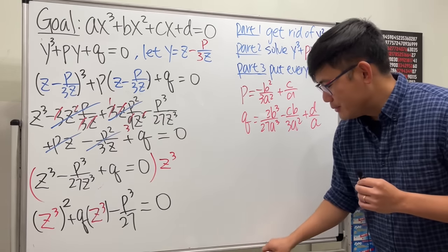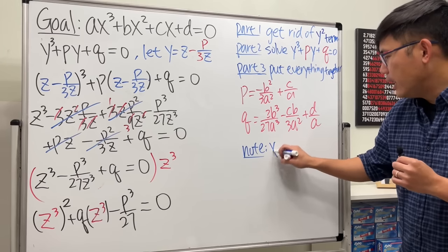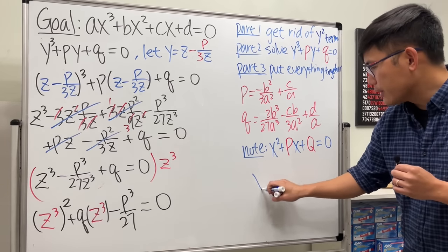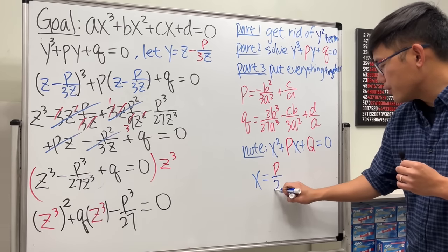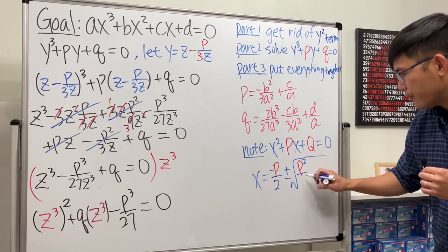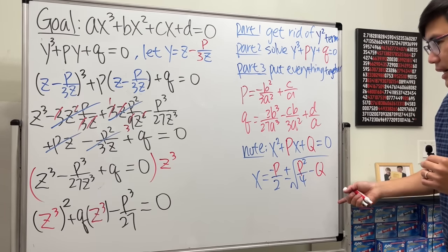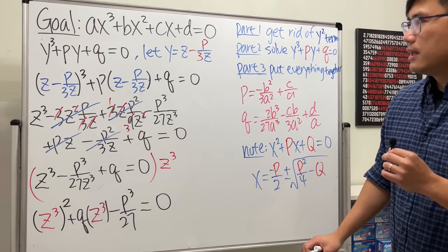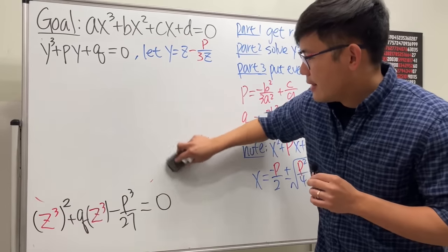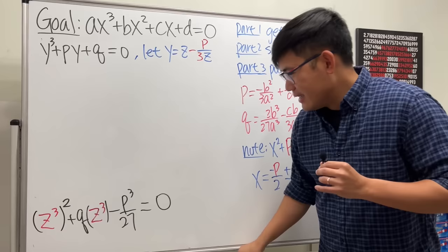Using the pq formula with capital P and Q — recall x² + Px + Q = 0 gives x = -P/2 ± √(P²/4 - Q). Our variable is z³. The capital P here is q and the capital Q is -p³/27, so z³ = -q/2 ± √(q²/4 + p³/27).